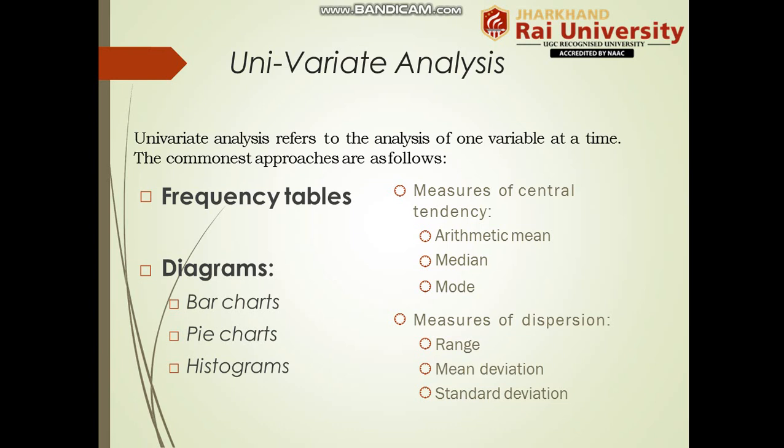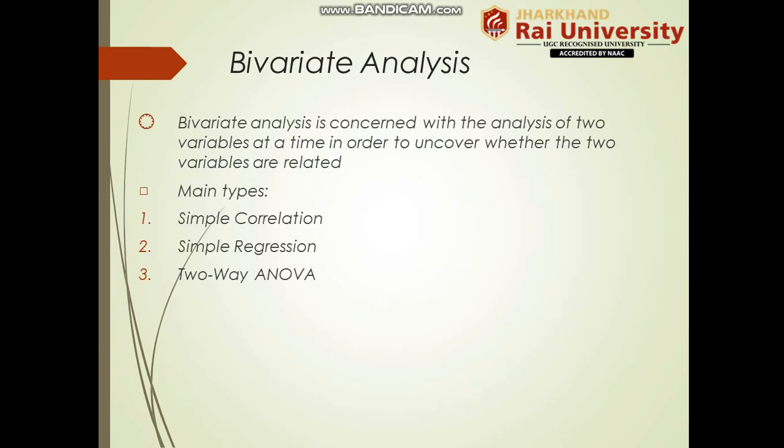Univariate analysis refers to the analysis of one variable at a time. The most common approaches are: distribution tables and diagrams such as bar charts, pie charts, and histograms; measures of central tendency including arithmetic mean, median, and mode; and measures of dispersion such as range, mean deviation, and standard deviation.